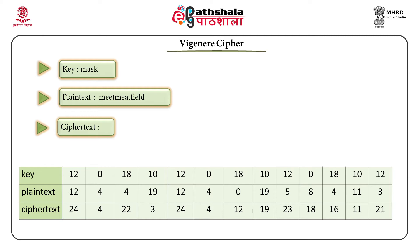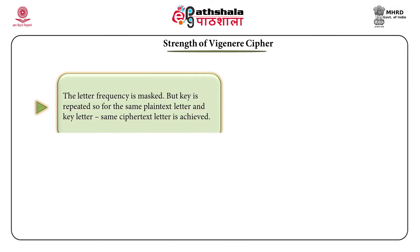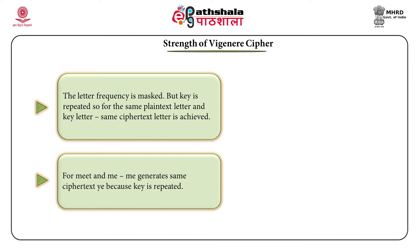The Vigenère cipher is easy to understand. But evaluating its strength — the key is repeated, so if we get the same plain text-key pair, we land up with the same cipher text. For the case 'meet me at filled', the combination of M and M comes again when the key is repeated. That kind of strength cannot be achieved through the Vigenère cipher.